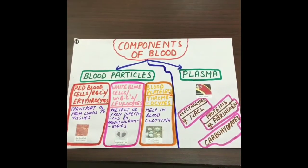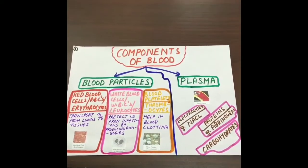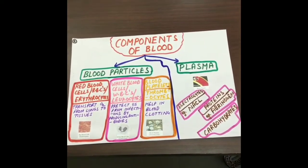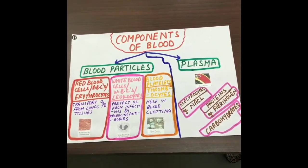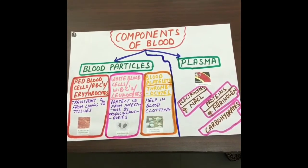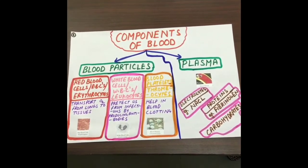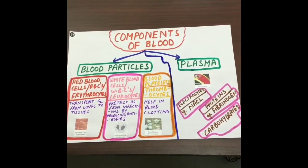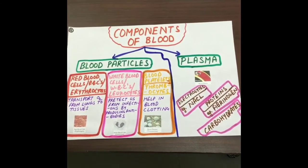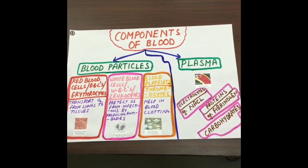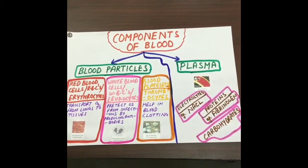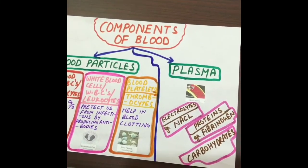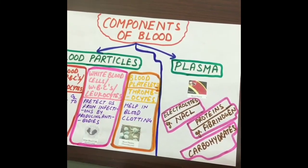Blood has two components: blood particles, which are the cells, and plasma. There are three types of cells. RBCs or red blood cells transport oxygen from lungs to tissues. WBCs or white blood cells protect us from infections by producing antibodies. Blood platelets or thrombocytes help in blood clotting. The fluid part of blood is known as plasma. It contains electrolytes, for example NaCl, proteins, for example fibrinogen, and carbohydrates.